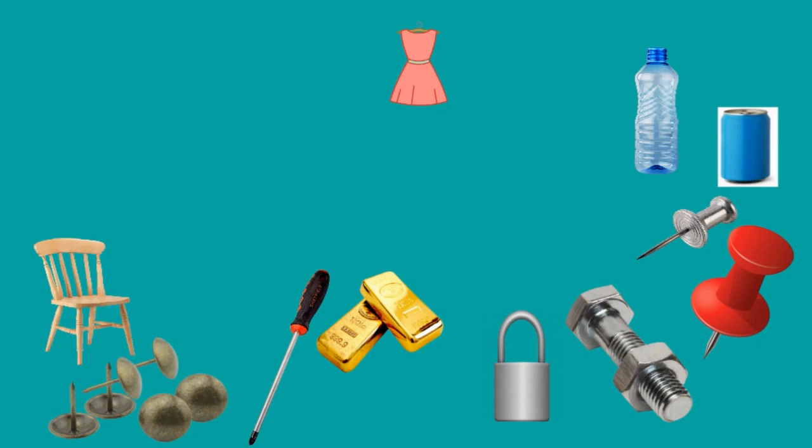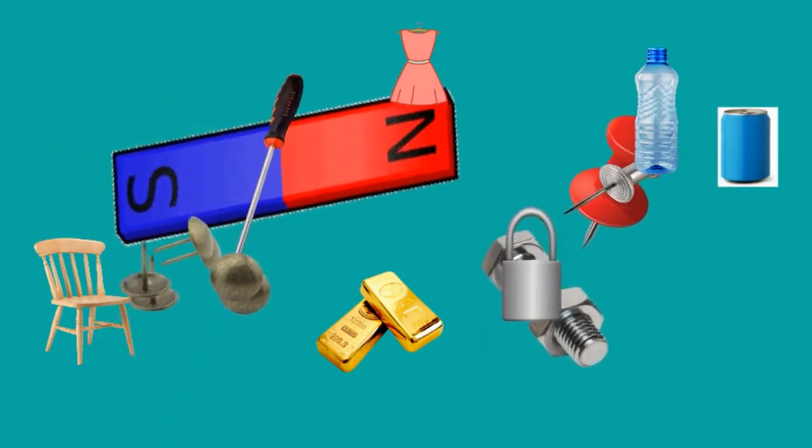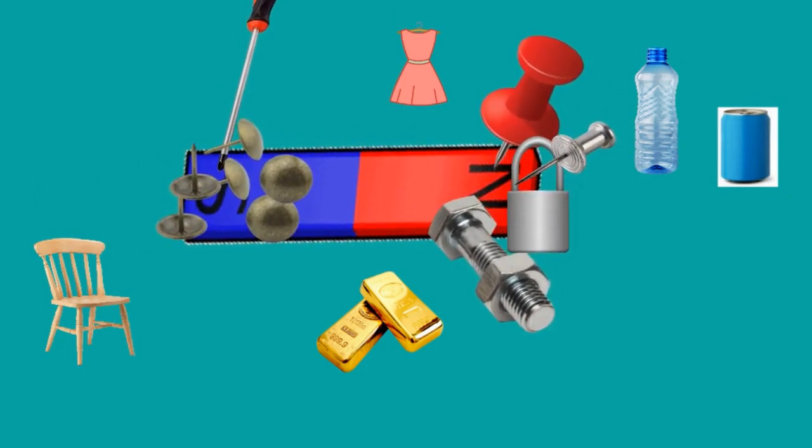We'll try to do a very simple test with magnet. So this is the magnet and we'll try to see which other materials will be attracted to the magnets. See, all these pins, nut and bolt, lock, screwdriver, these pins, these all are attracted. Basically these all are metals.